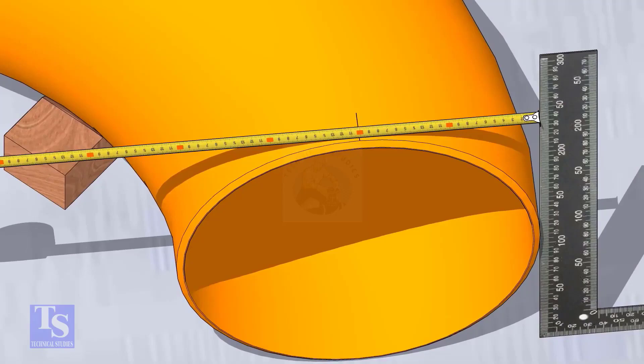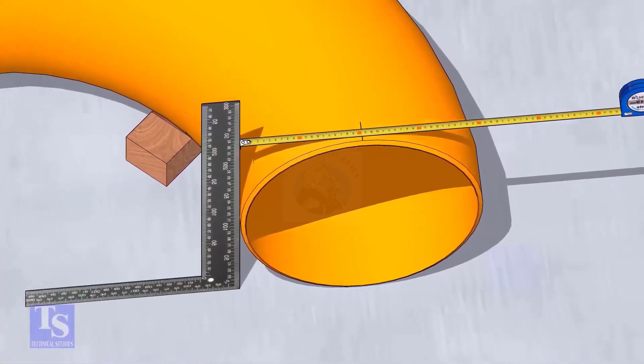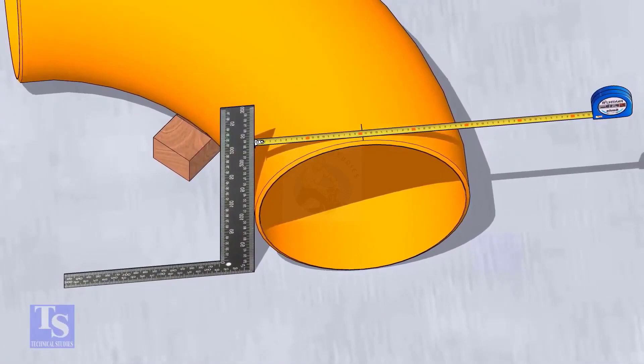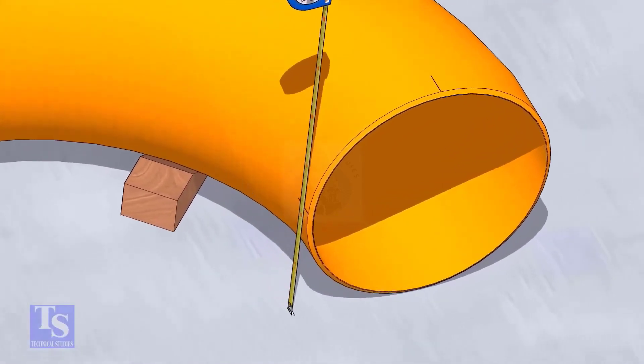Put the right angle on the opposite side and check if the marking is correct. Mark half diameter from the plate to the elbow on both sides as shown.